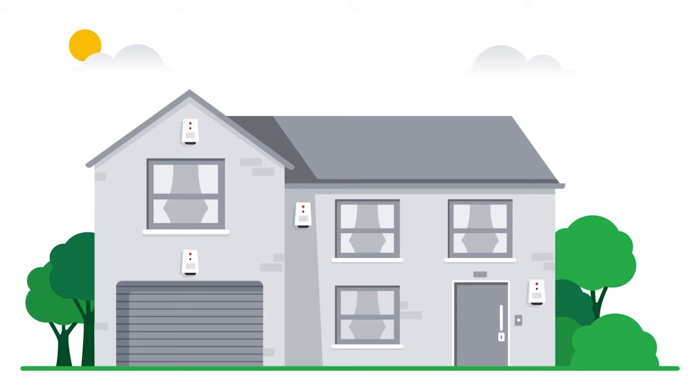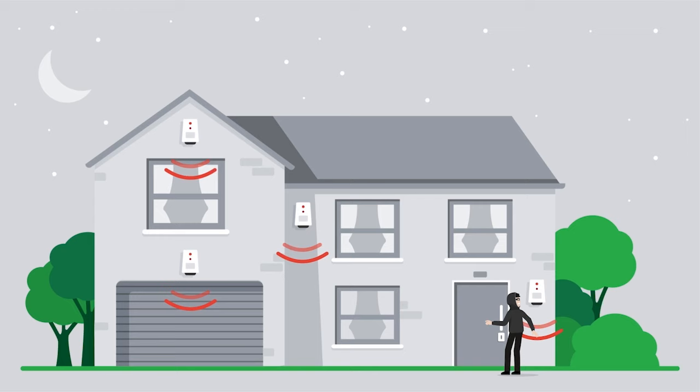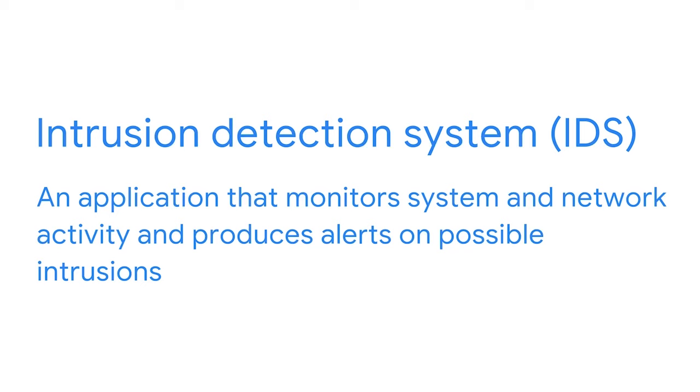In this video, we'll introduce you to intrusion detection and intrusion prevention systems. Imagine you've installed a home intrusion security system with sensors at each entry and exit point. Those sensors send out sound waves, and when an object touches a sound wave, the waves bounce back and trigger an alert to your phone. An intrusion detection system, or IDS, works in a very similar way — it's an application that monitors system and network activity and produces alerts on possible intrusions. IDS collects and analyzes system information for abnormal activities, and if something unusual is detected, it sends out an alert to appropriate channels and personnel.